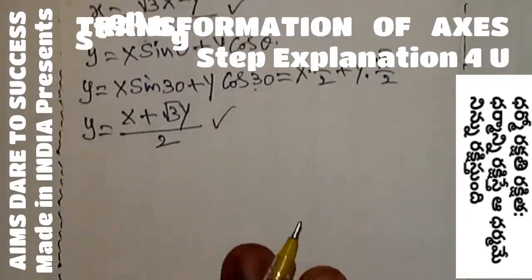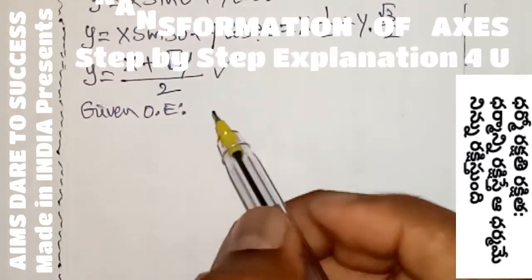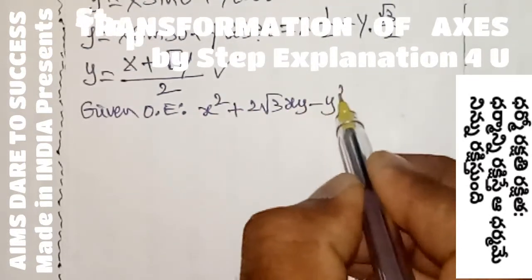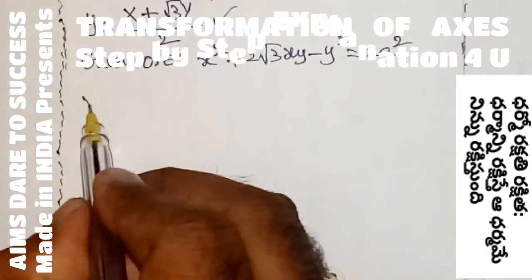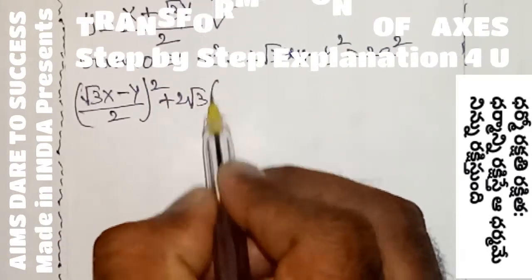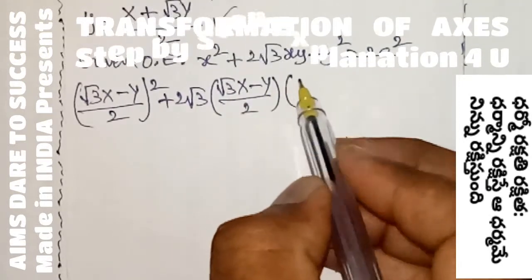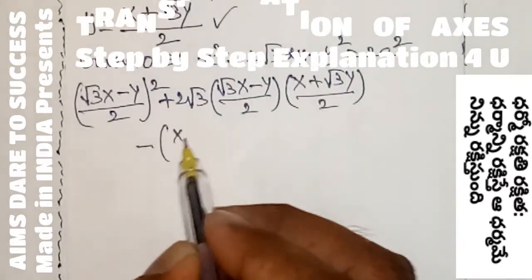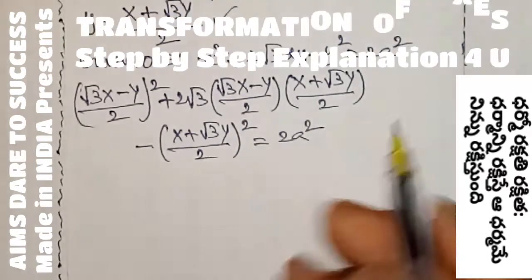The given original equation is x² + 2√3·xy − y² = 2a². Substitute: small x = (√3X − Y)/2 whole square, plus 2√3 · (√3X − Y)/2 · (X + √3Y)/2, minus y² where y = (X + √3Y)/2 whole square, equals 2a².